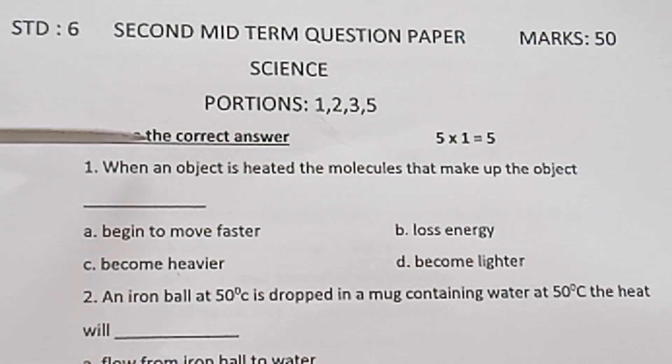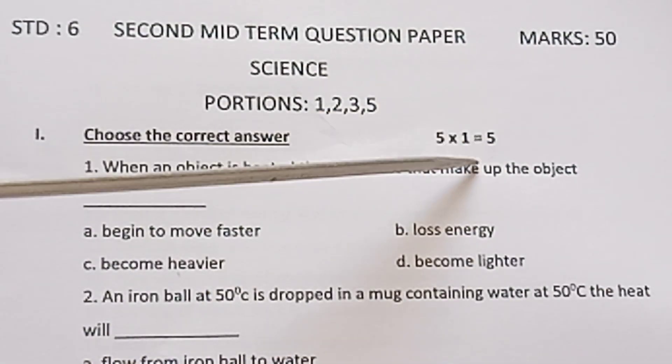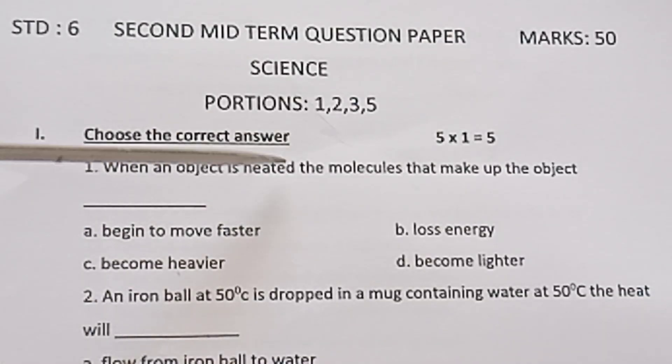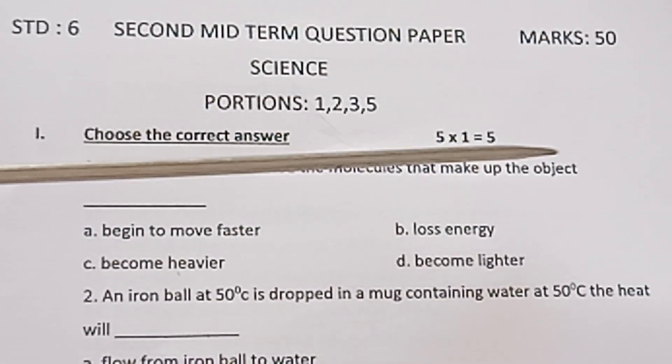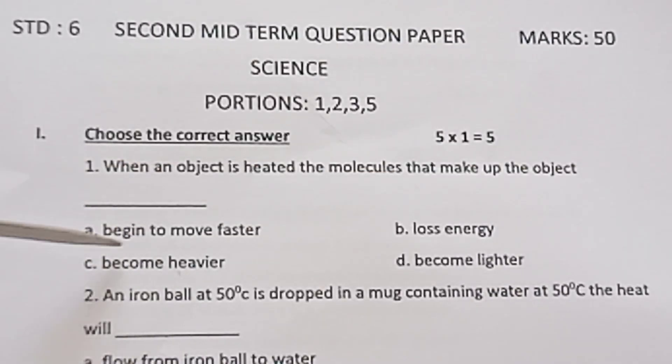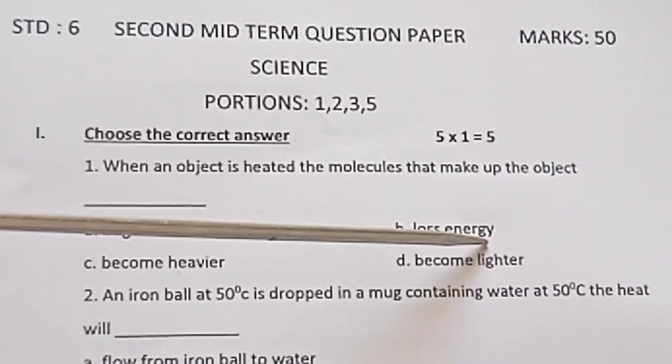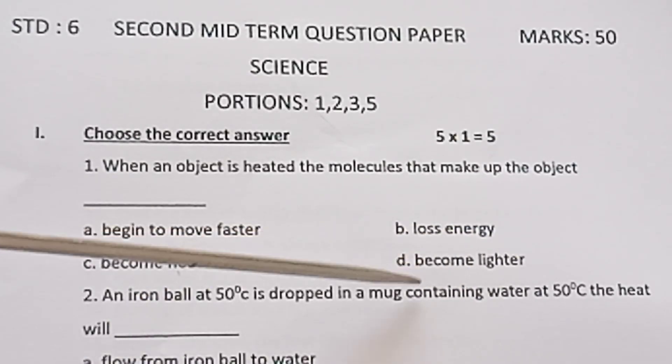First, choose the correct answer. 5 × 1 = 5. Question 1: When an object is heated, the molecules that make up the object: a) begin to move faster, b) lose energy, c) become heavier, d) become lighter.